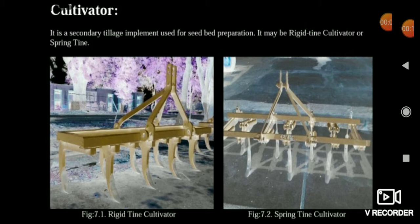Cultivator is mainly a secondary tillage implement and it is used for seed bed preparation. There are mostly two types of cultivators: the first one is Rigid Tyne Cultivator and the second one is Spring Tyne Cultivator.